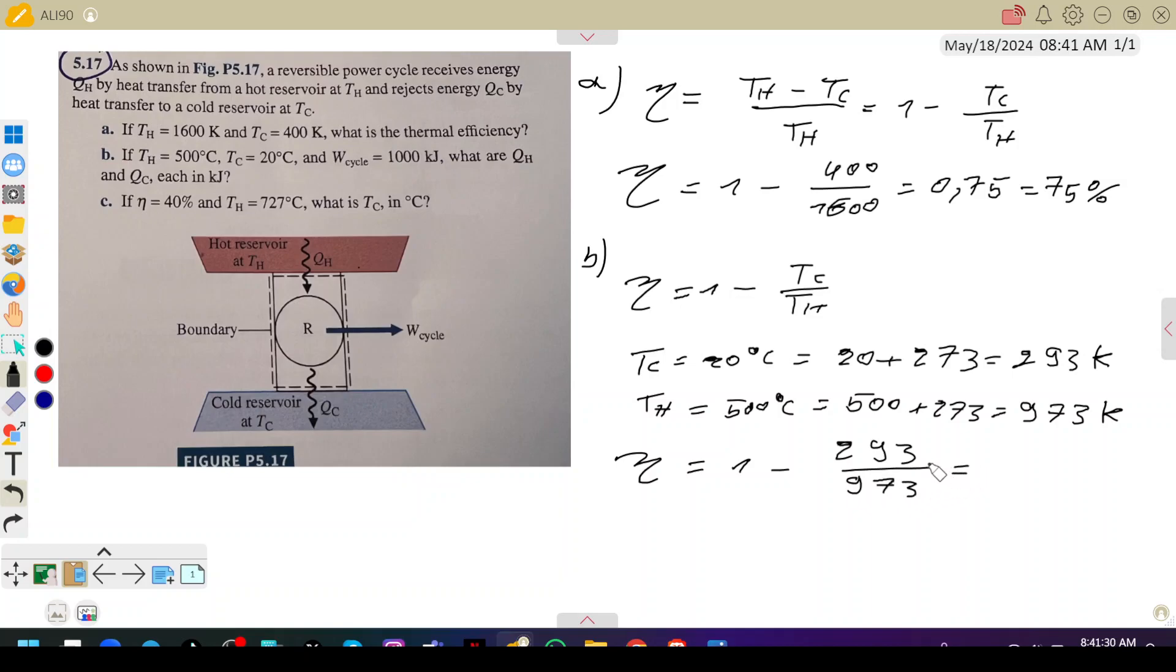So 1 minus this ratio, 293 divided by 973, is 0.69, which means 69 percent. Now we have the value of W.